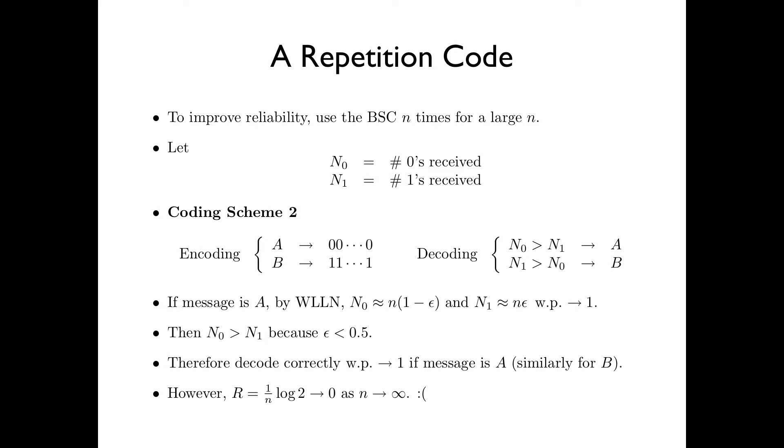However, the coding rate of this code, which is equal to 1 over n times log 2, because we use the channel n times to complete the transmission, would tend to 0 as n tends to infinity. In other words, the amount of information that can be transmitted per use of the channel tends to 0 as n tends to infinity. Therefore, with Coding Scheme 2, while we can make the scheme more and more reliable by using a larger and larger n, the coding rate would become smaller and smaller and approach 0.